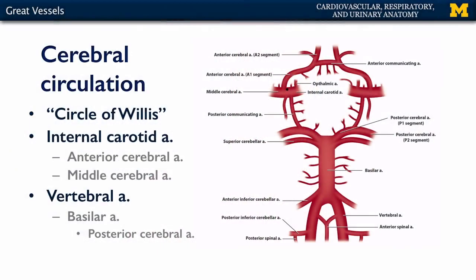When we look at the constituents of the circle of Willis, from the internal carotid there's the anterior cerebral and its communicating artery that bridges the two, the middle cerebral arteries, and those posterior communicating branches which connect to derivatives of the vertebral artery.